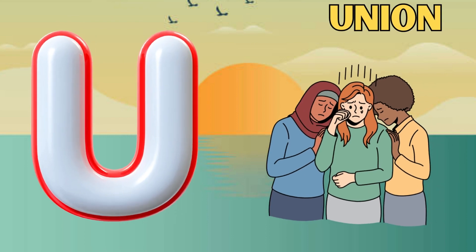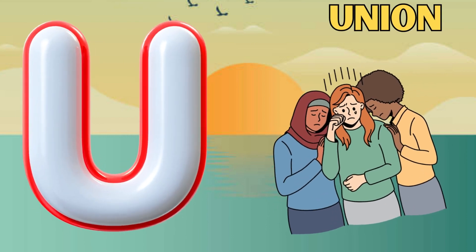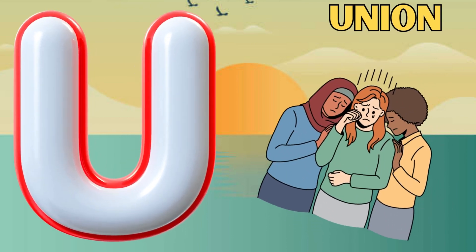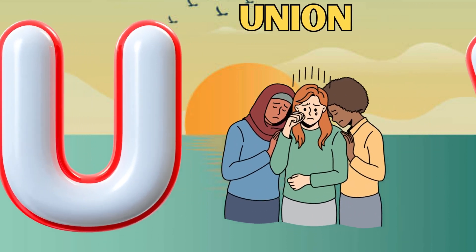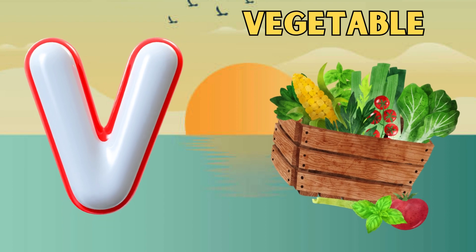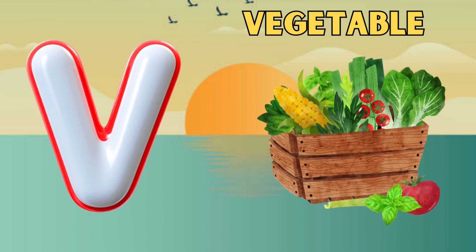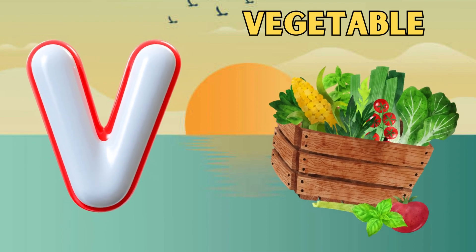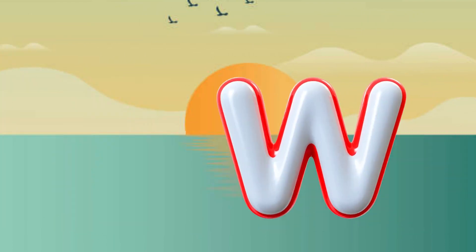U is for union, union. V is for vegetable, vegetable.